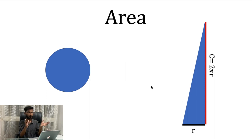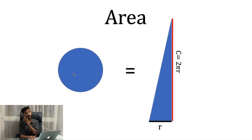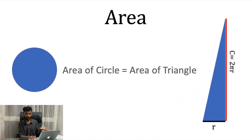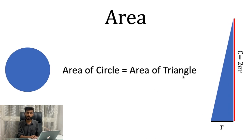From this small method, we realize that the area of the circle is nothing but equals to the area of this triangle. Area of circle equals area of triangle. We need to find area of circle.